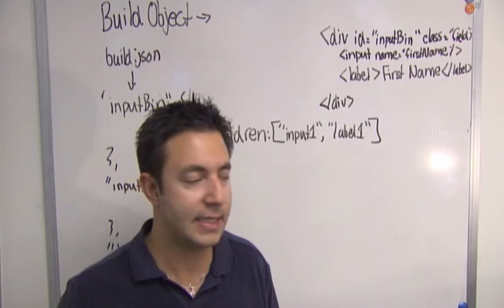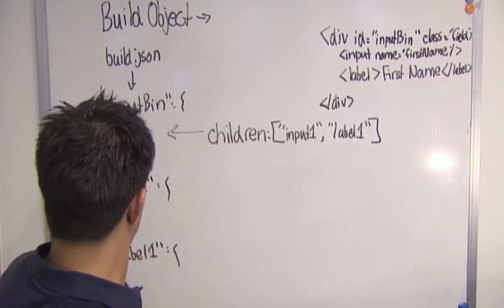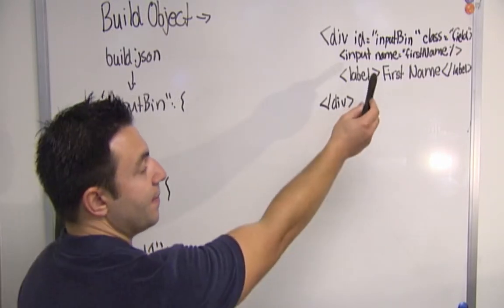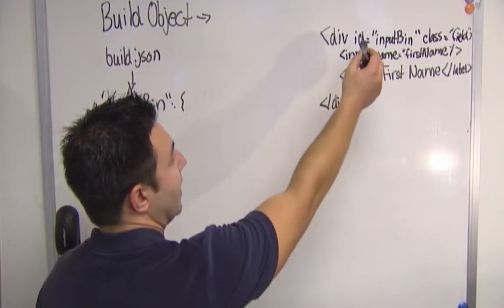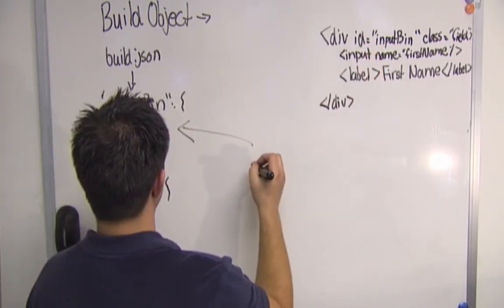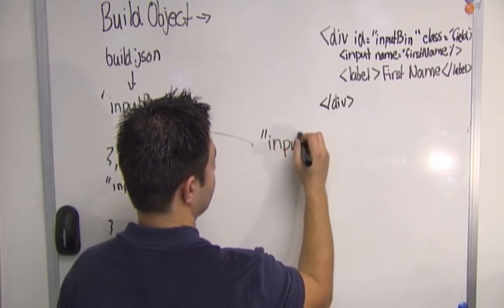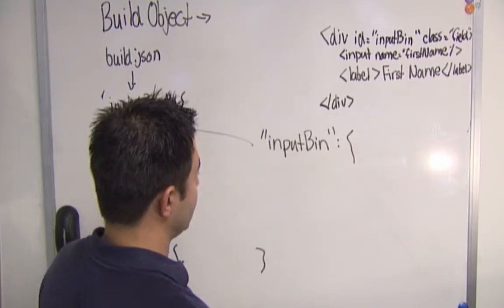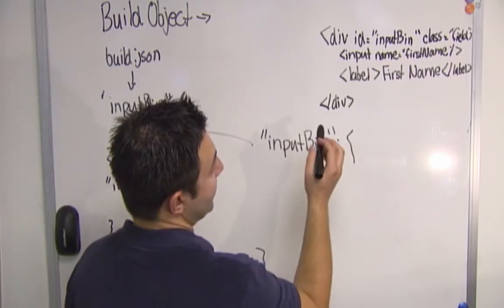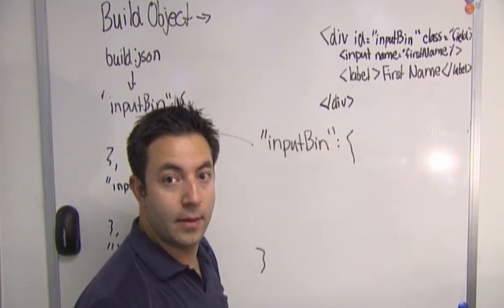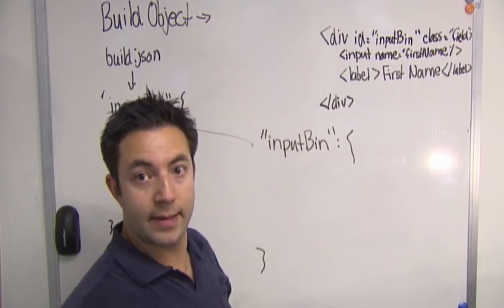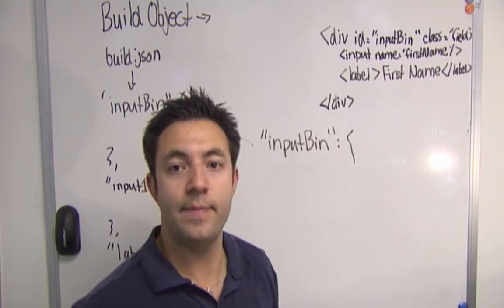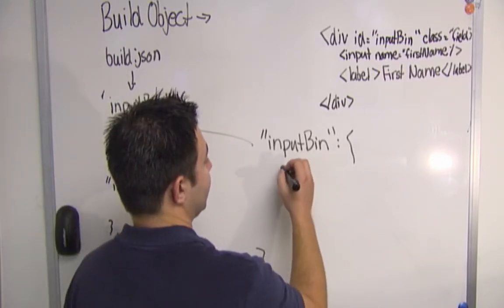And that will make more sense when we talk about dynamic data. So let's just quickly go through, let's review how we would populate input bin to match a build object that would build this. So input bin is going to have... We don't need to specify quantity because we're just wanting to build one. And so by default, there's one. We don't need to specify a type because by default, the type is div.